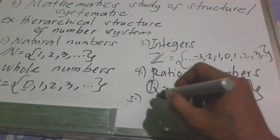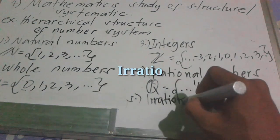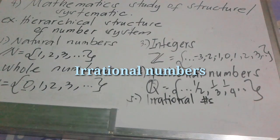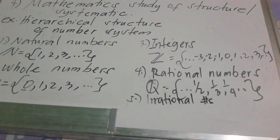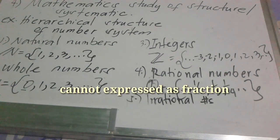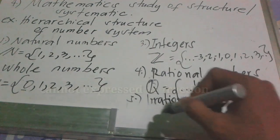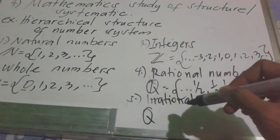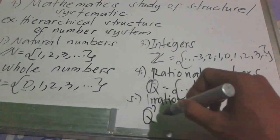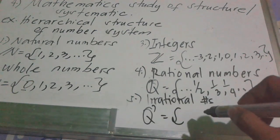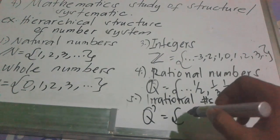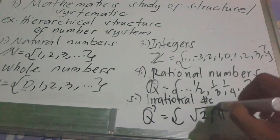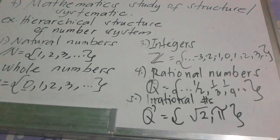Next is the irrational number. If there are rational numbers, there are also irrational numbers. Irrational numbers are the opposite of rational numbers — if rational numbers can be expressed as a fraction, irrational numbers cannot be expressed as a fraction. The symbol is Q-prime. Common examples are radical forms such as the square root of two, and also pi, which is an irrational number.